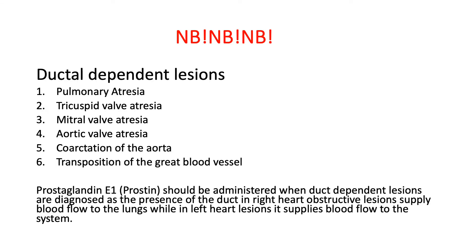Duct-dependent lesions require administration of prostaglandin E1, which is prostin. The presence of the duct in right heart obstructive lesions supplies blood flow to the lungs, while in left heart lesions it supplies blood flow to the systemic circulation. Examples of duct-dependent lesions include pulmonary atresia, tricuspid valve atresia, mitral valve atresia, aortic valve atresia, coarctation of the aorta, and transposition of the great vessels.